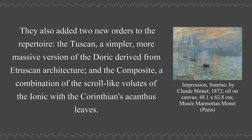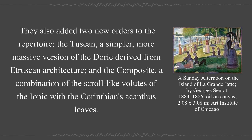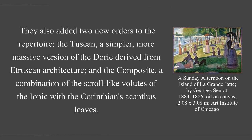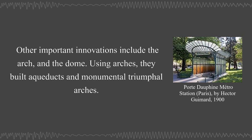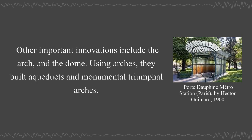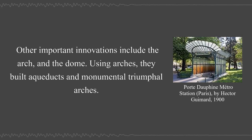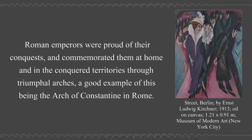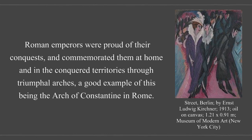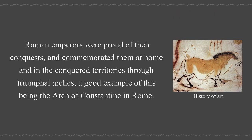They also added two new orders to the repertoire: the Tuscan, a simpler, more massive version of the Doric derived from Etruscan architecture, and the Composite, a combination of the scroll-like volutes of the Ionic with the Corinthian's acanthus leaves. Other important innovations include the arch and the dome. Using arches, they built aqueducts and monumental triumphal arches. Roman emperors commemorated their conquests through triumphal arches, a good example being the Arch of Constantine in Rome.